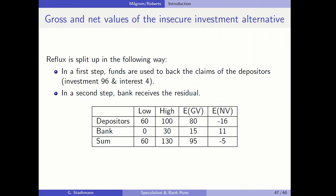How is the reflux split up in the insecure alternative? In the low state of nature, 60 units go to the depositors and nothing to the bank. In the high state of nature, the reflux is 130: 100 goes to the depositors and the remaining 30 to the bank. The expected gross value for the depositors is 80 and for the bank is 15. The expected net value for the depositors is negative: they invested 96 and the expected gross value is 80, so 80 minus 96 equals minus 16.